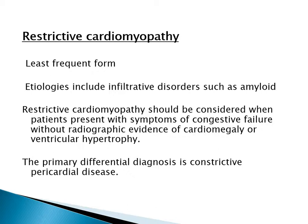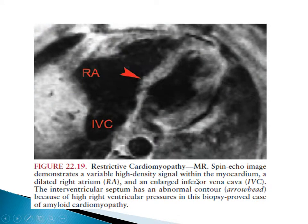Restrictive cardiomyopathy is the least frequent form. Etiologies include infiltrative disorders such as amyloid. It should be considered when patients present with symptoms of congestive heart failure without radiological evidence of cardiomegaly or ventricular hypertrophy. The primary differential diagnosis is constrictive pericardial disease, and CT can differentiate them. This case shows right atrial dilation, interventricular septal abnormality with high signal, dilated IVC, and abnormal signal within the myocardium — a case of amyloid restrictive cardiomyopathy.